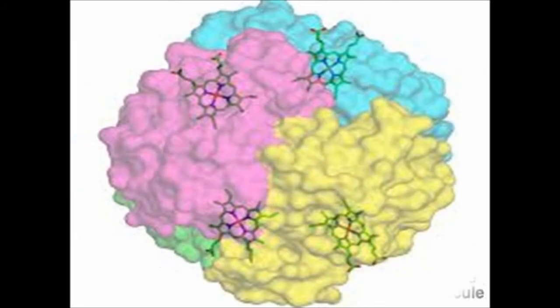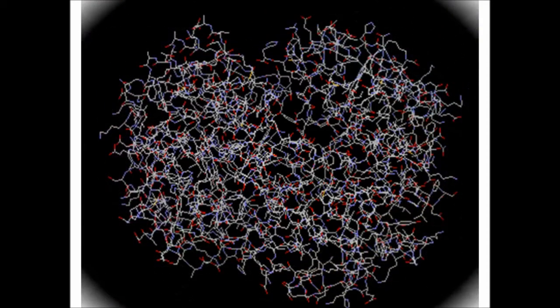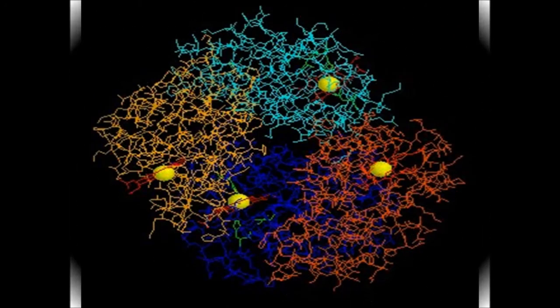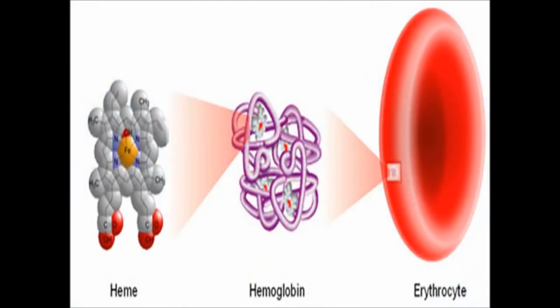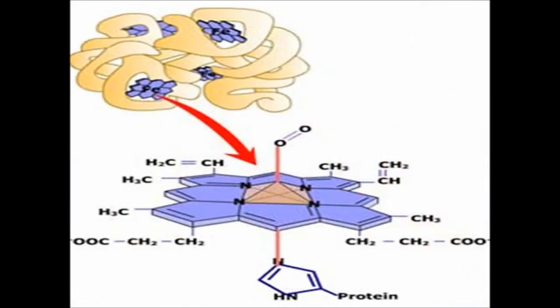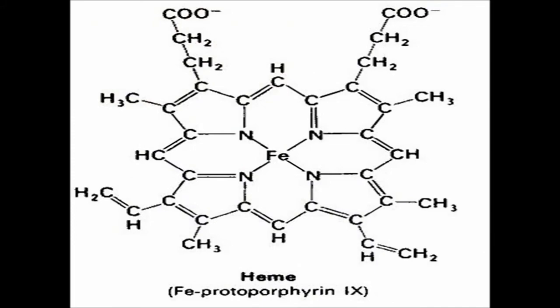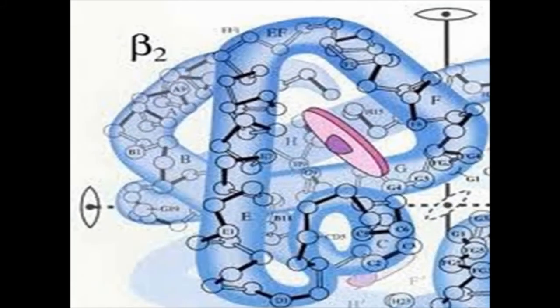In every hemoglobin molecule there are 4 molecules of heme. These heme molecules are extremely small, so that you can arrange 1 million of them on the upper surface of a red blood cell, as well as 1 more million on the other surface.